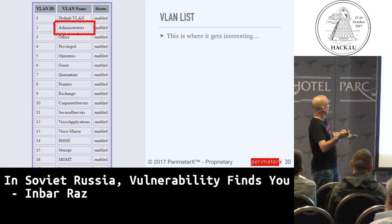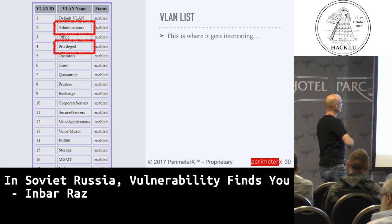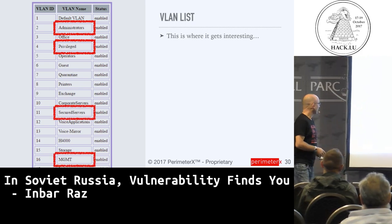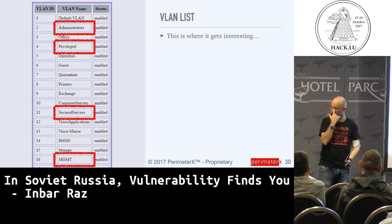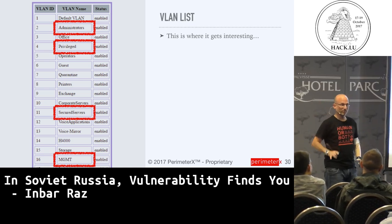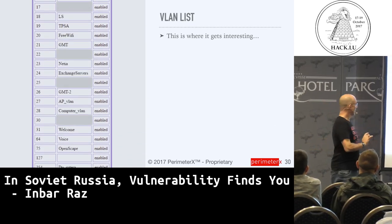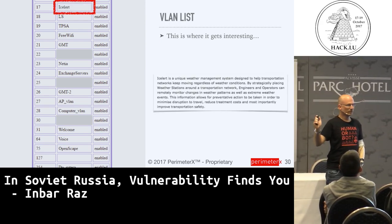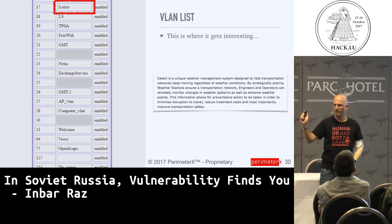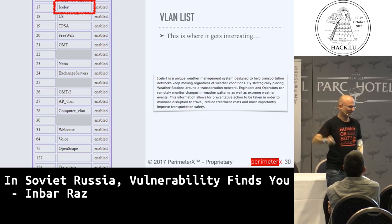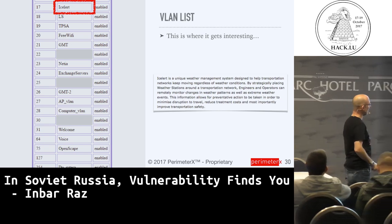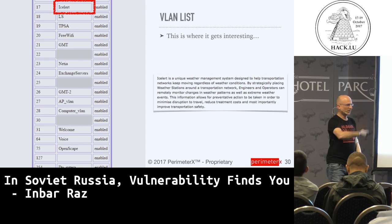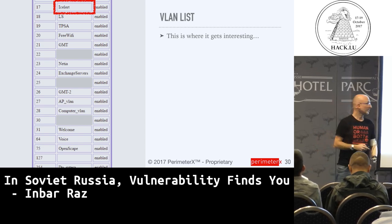So I get to the VLAN list. We have: administrators, privileged, secured servers, and MGNT — that's probably management. But that's not even the cool stuff. Islert — who knows Islert? Islert is a weather reporting system. When you see weather reports at the airport, that's how they get that. And what is FIDS?